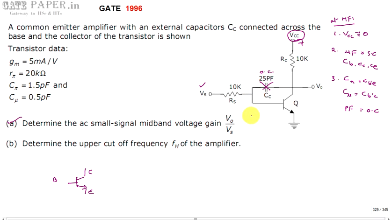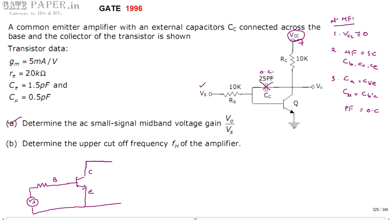The base is directly connected to RS through VS. The emitter is directly grounded. The collector is connected to VCC — that is, ground — through RC. This is the equivalent circuit at mid frequencies. Now to calculate voltage gain, we must replace the transistor symbol with an equivalent model.